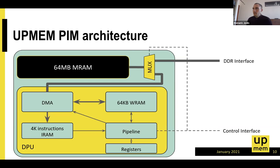The control interface is memory-mapped just like the memory banks. The DPU is not memory-mapped, so you cannot communicate with it directly through the DDR interface. The only communication is through the control interface, which sends commands to each DPU. Each DPU can access only its own 64 MB memory bank — it cannot see other DPUs or other memory banks.